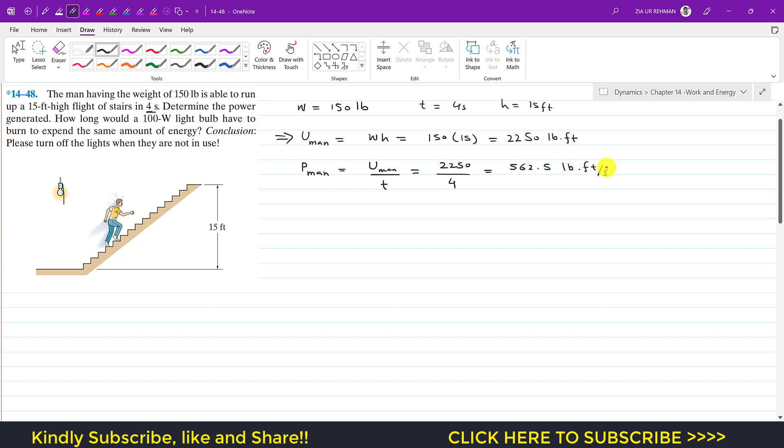Now the power of the bulb is given, so we can say that power of bulb is 100 watts. Now since we are solving this problem in pound-feet-seconds, we have to convert this into pound-feet-second as well. This is the SI units and this is the feet-pound-second system.